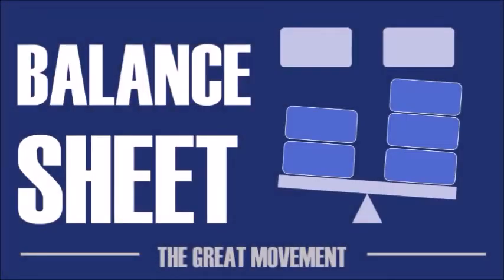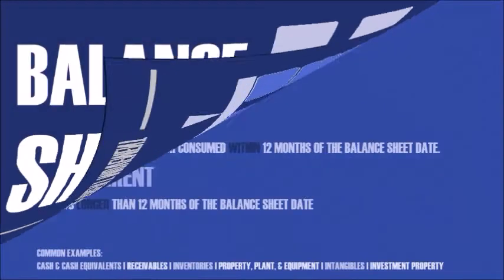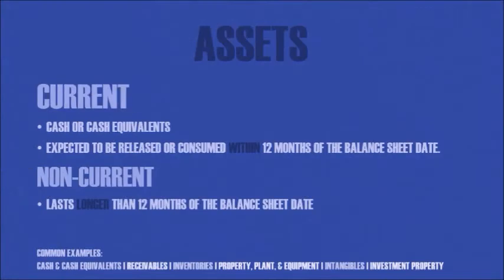Today we'll be looking at the balance sheet. The first thing we'll look at is assets. There are two types of assets: current and non-current. For most entities, current assets means cash or cash equivalents and assets that are expected to be realized or consumed within 12 months of the balance sheet date, while non-current assets are realized or consumed outside of the 12-month period.